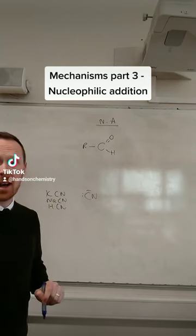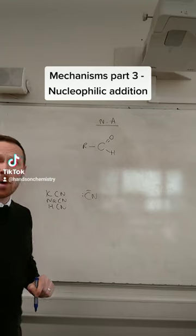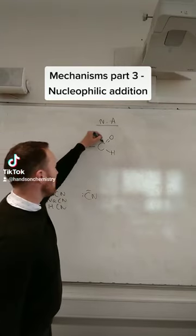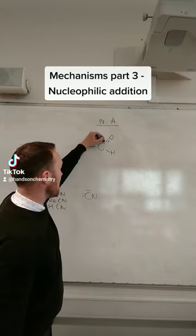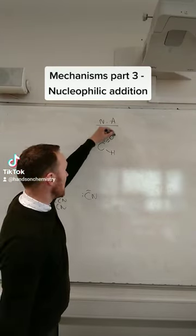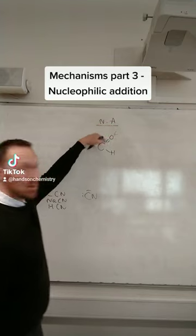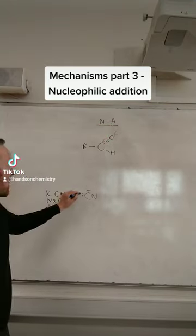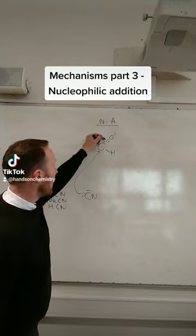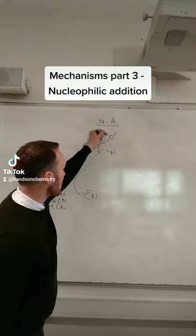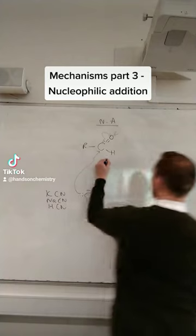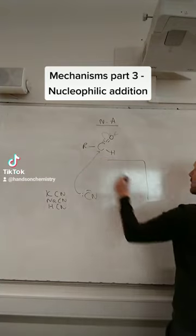We're going to see a CN minus ion. This carbon is delta positive, delta negative — an uneven distribution of electrons because of the difference in electronegativity. The cyanide attacks there, and the electron pair is transferred onto the oxygen. This intermediate is so important.